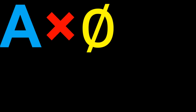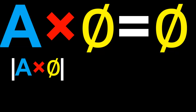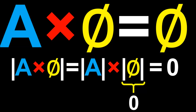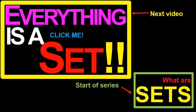Let's now revisit our earlier claim that the Cartesian product of any set A with the empty set is itself the empty set, and prove this using a different method. Using our new fact that |A×B| equals |A| times |B|, with the empty set as the second set, the number of elements in A times the empty set equals |A| times zero, which equals zero. Since there is only one set containing zero elements — namely the empty set — A cross the empty set must itself be the empty set. In the next video, we'll talk about how everything is a set.